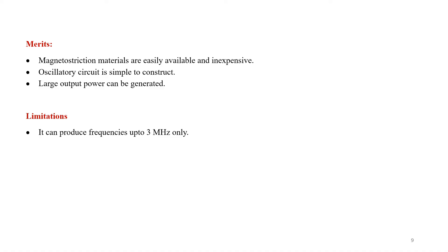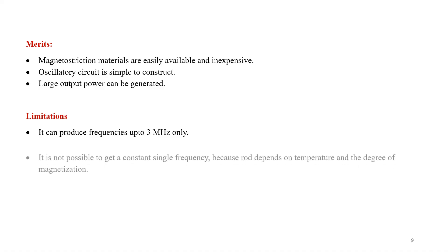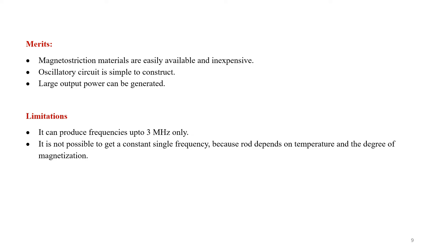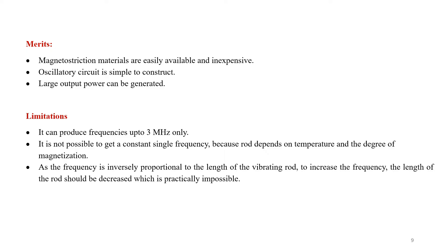One major drawback is that the frequencies generated by this method are only up to 3 megahertz — you can only produce ultrasonic sound waves with frequency less than 3 megahertz. Another drawback is that it is not possible to have a constant single frequency, because the rod's behavior depends on temperature and the degree of magnetization. Additionally, since frequency is inversely proportional to the length of the rod, to increase frequency the rod length must be decreased, which is not possible for a given circuit. To overcome these disadvantages, we need to use another method.